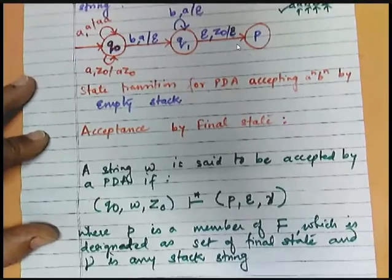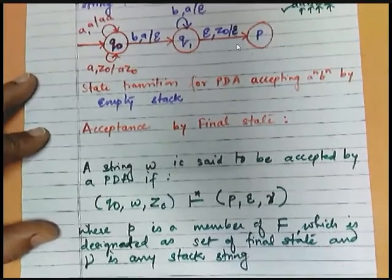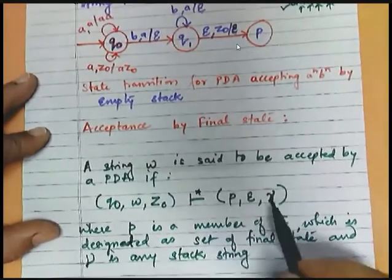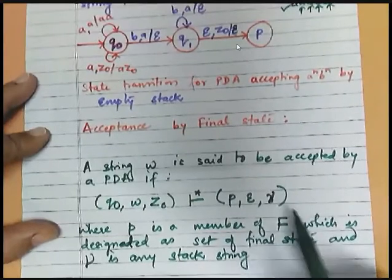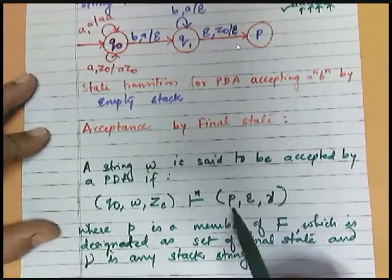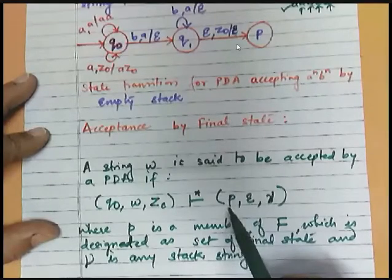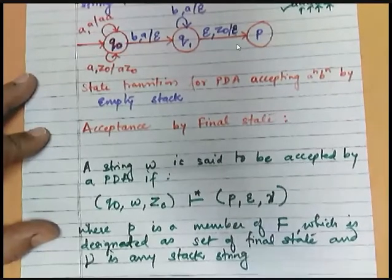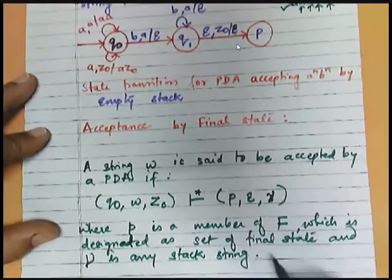Capital F is indicating set of final states. And gamma is any stack string, no matter whether it is empty or not. We are not bothering about that to be empty or non-empty. We are only bothered about whether this P is final state or not. This means that upon reading string W, if PDA transits to final state, then W is said to be accepted by PDA.